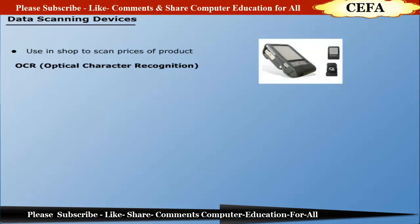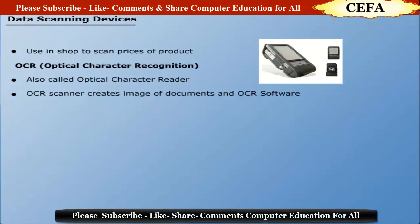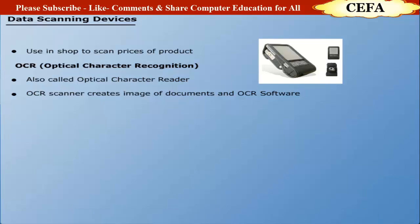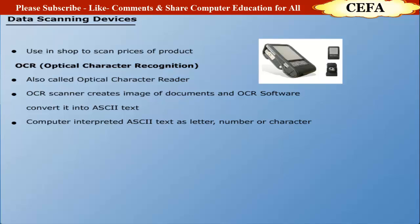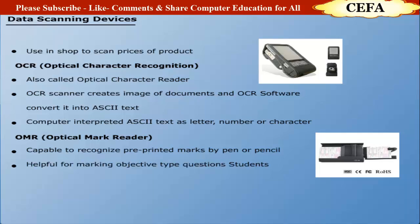Optical Character Recognition (OCR): OCR is also called an optical character reader. It uses software called OCR software. The scanner first creates an image of the document, and then the OCR software converts that image into ASCII text. The computer interprets the ASCII text as letters, numbers, and special characters. Optical mark reader: An optical mark reader has the capability to recognize pre-mentioned marks made by a pen or pencil.